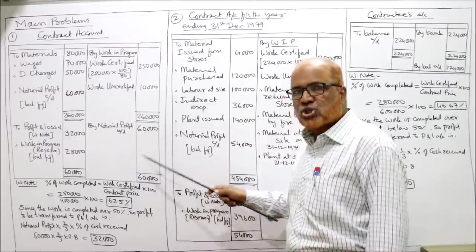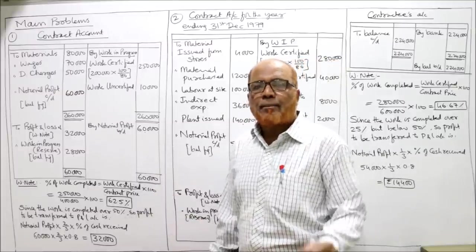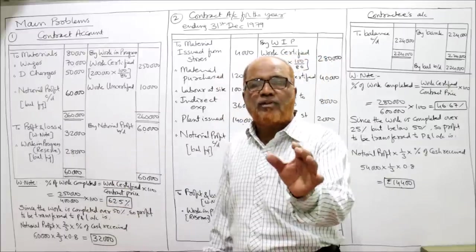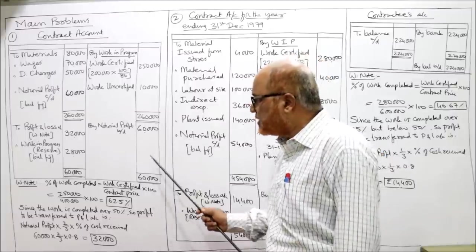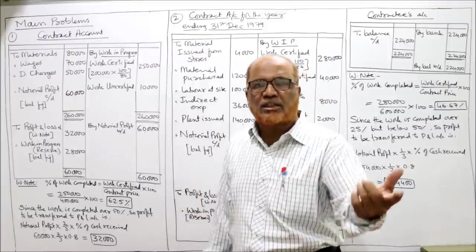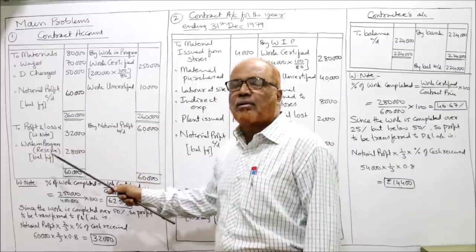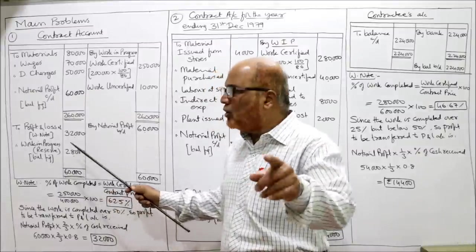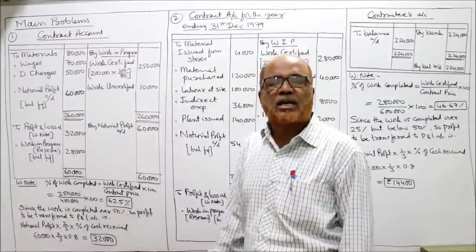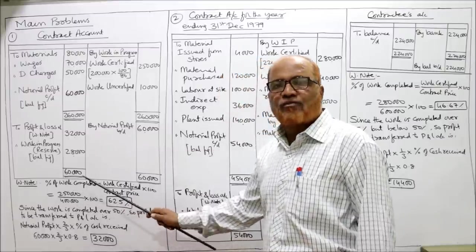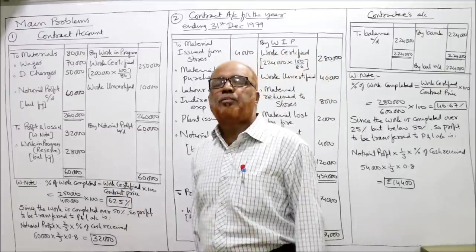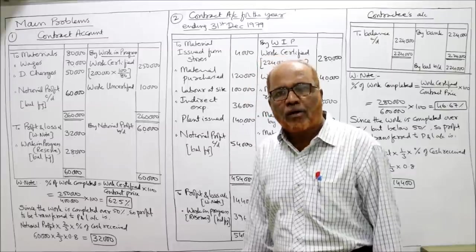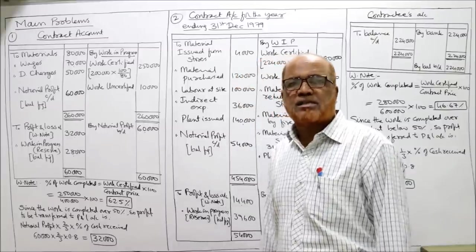Out of 60,000 notional profit, we determine how much goes to the P&L account via a working note. The profit to be transferred to P&L account depends on the percentage of work completed. The formula is: work certified ÷ contract price × 100. Contract price is 4 lakh and work certified is 2,50,000.